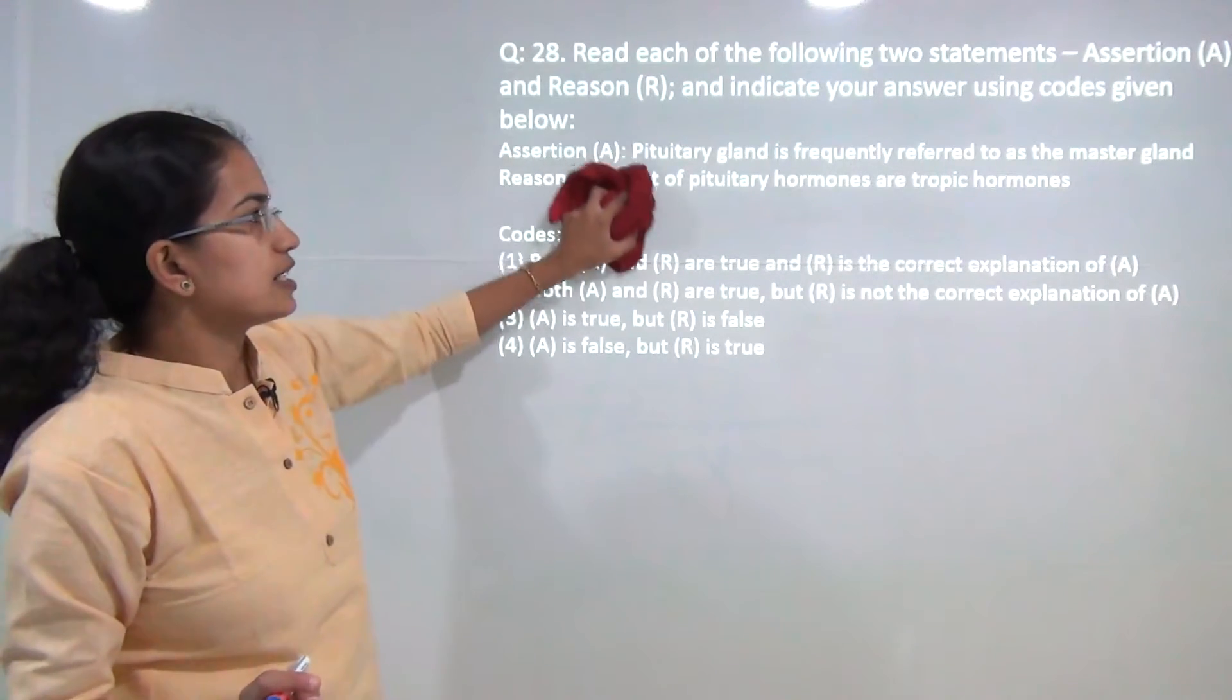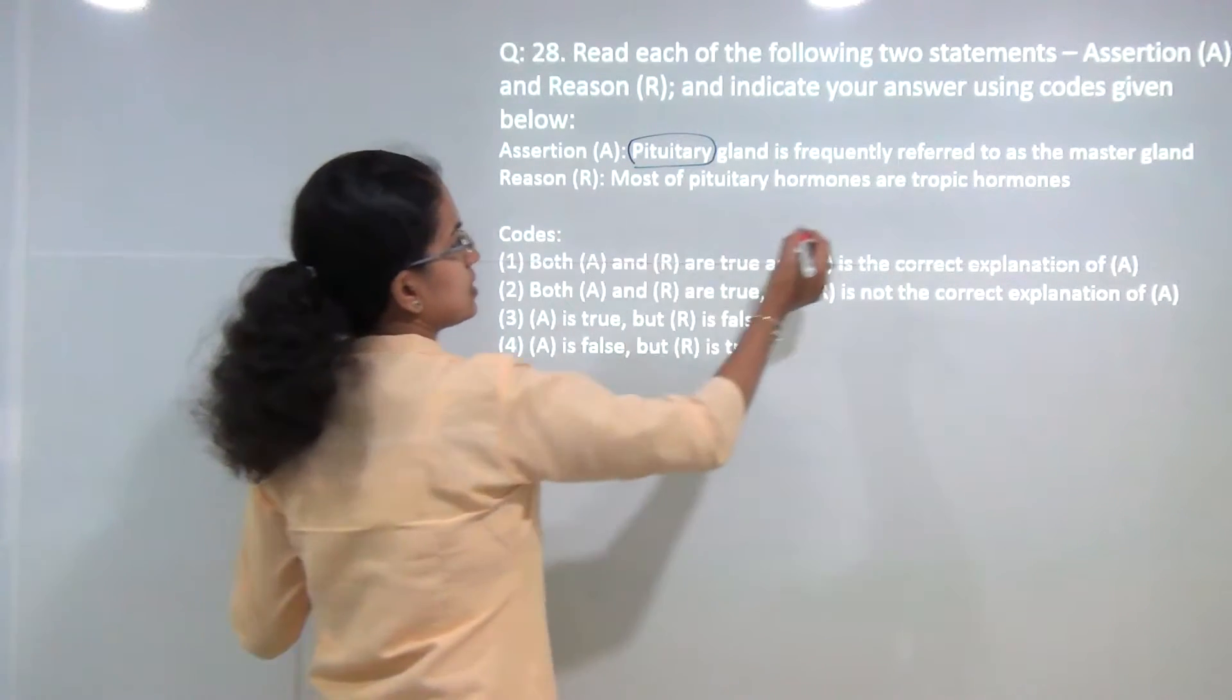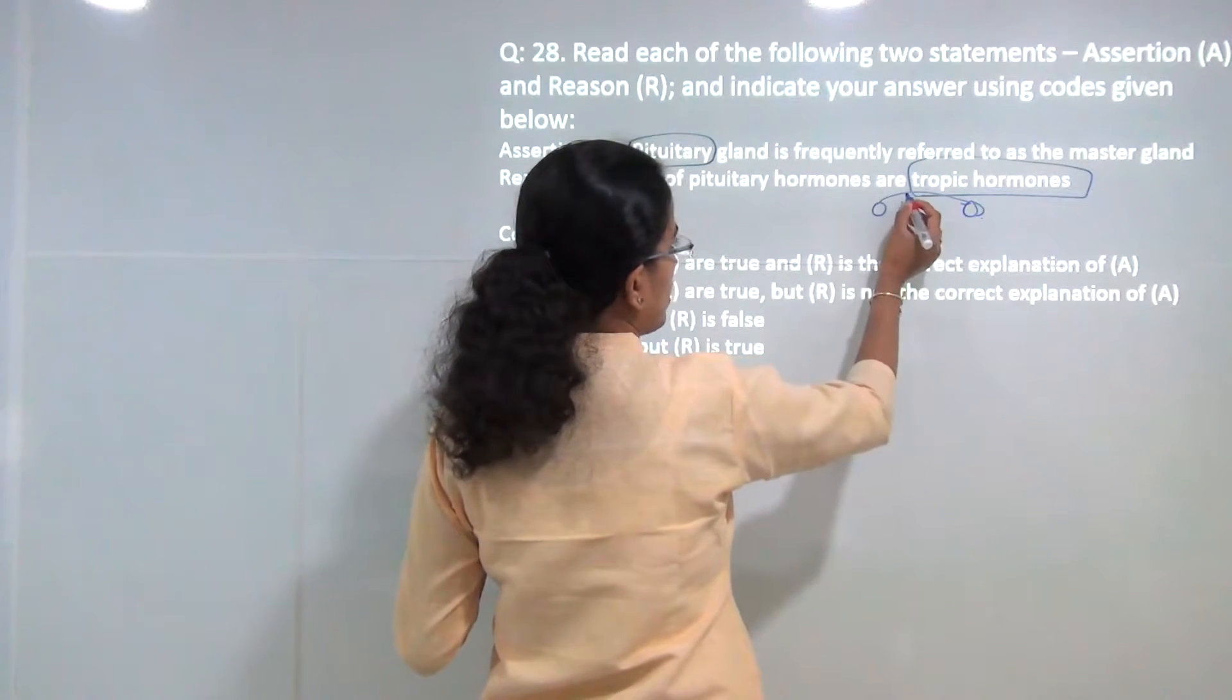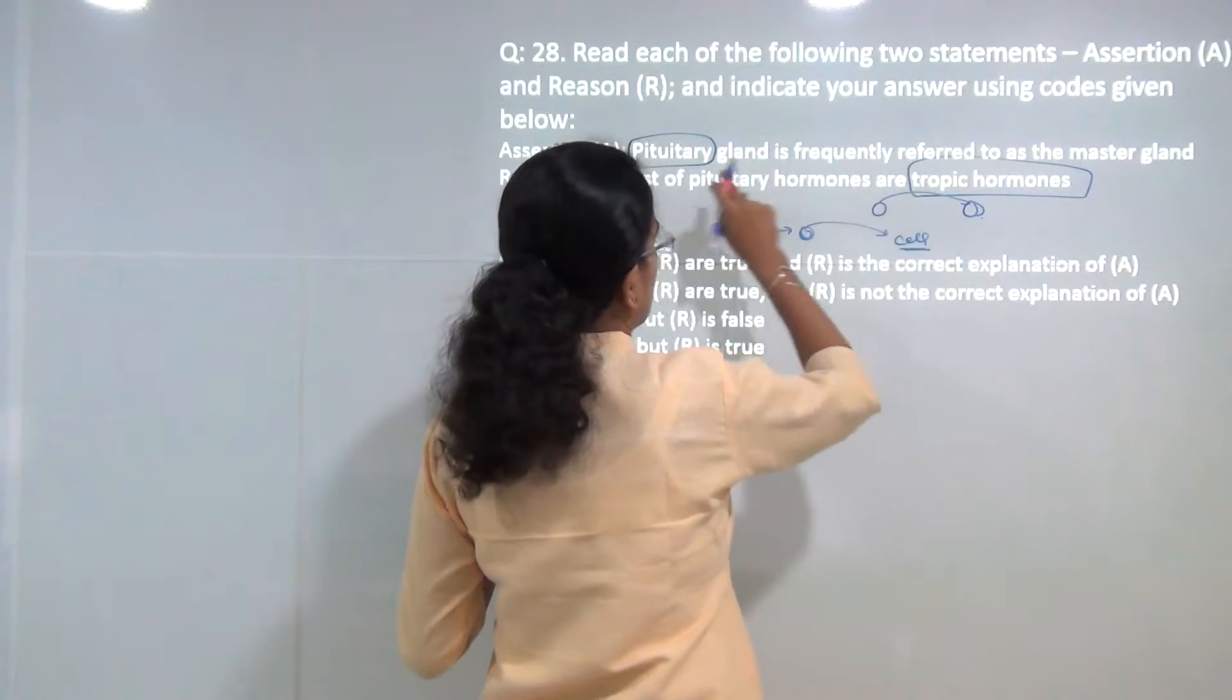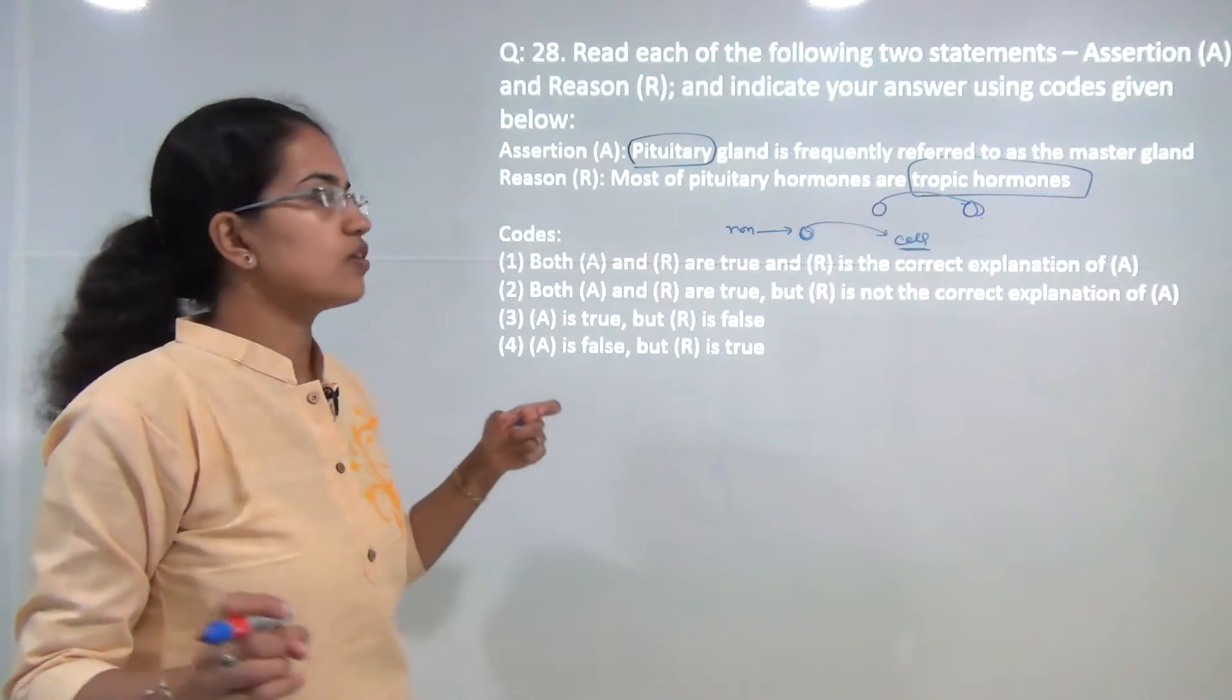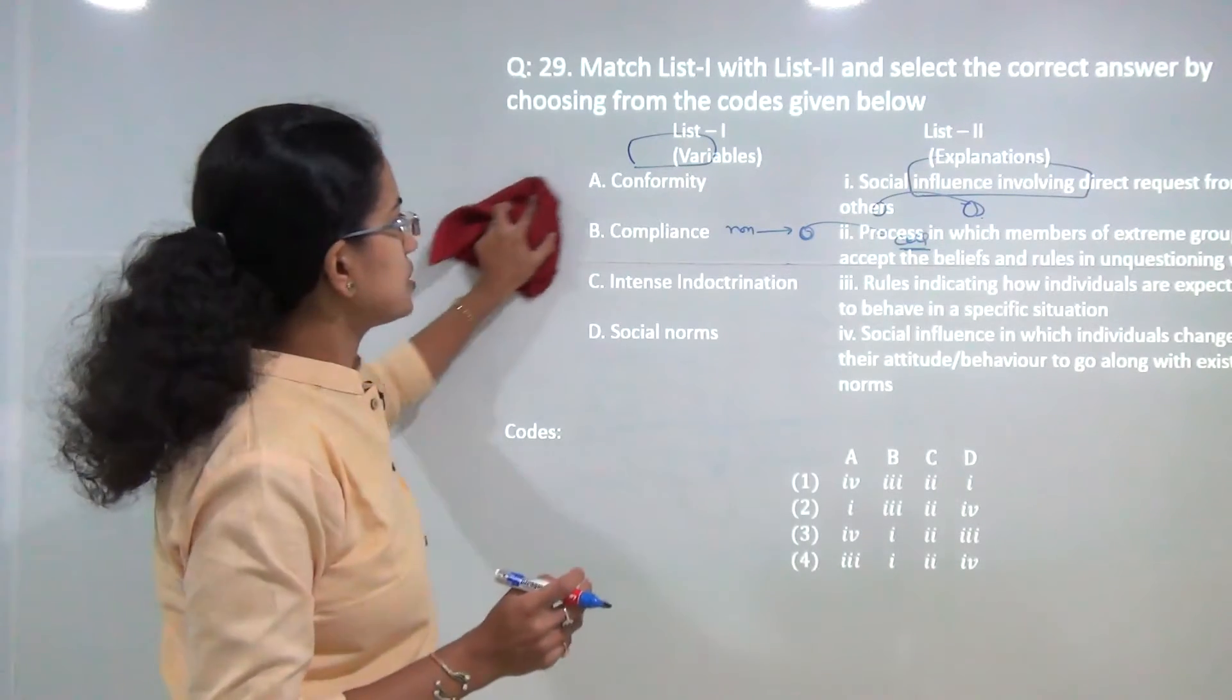Next, pituitary gland is referred to as master gland. Why? Because it is the major gland which releases hormones to the other glands as tropic hormones. There are two types of hormones: tropic and non-tropic. Tropic are the ones where one gland provides it to the other gland. In non-tropic, you have the gland directly providing to the target or the cell. Pituitary produces both tropic and non-tropic hormones, mainly the tropic hormones. As a result, it is known as the master gland because it controls the functioning of the other glands of the body. So you have both the statements and reason as correct explanation for the assertion.